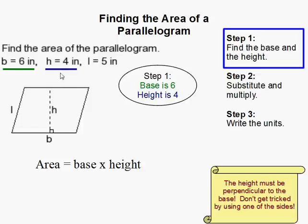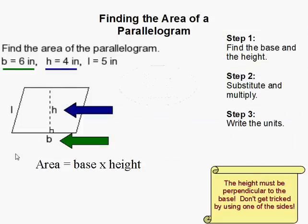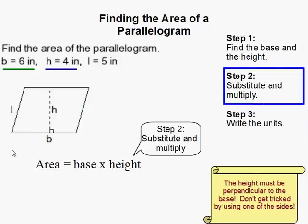So that being said, we have base is 6, height is 4. Then all we have to do is substitute our base and height into our equation of base times height. And that is 6 times 4, and that simply gives us 24.